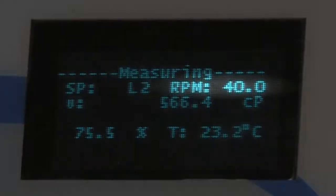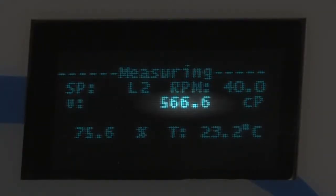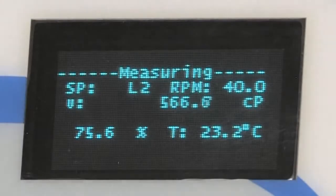Monitor selected speed, selected spindle, viscosity, and percent of full scale on the four-line or five-line vacuum fluorescent display.